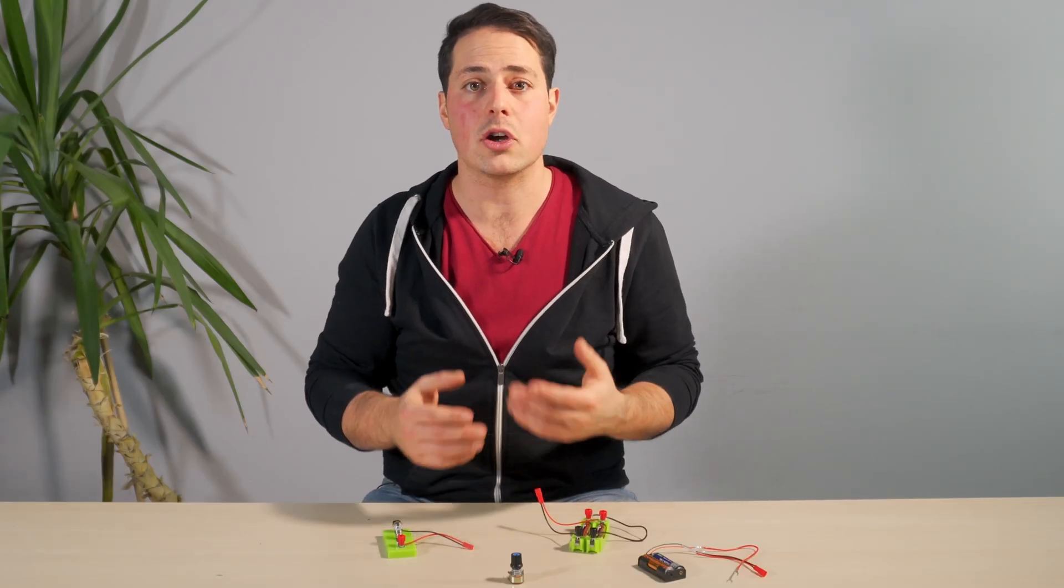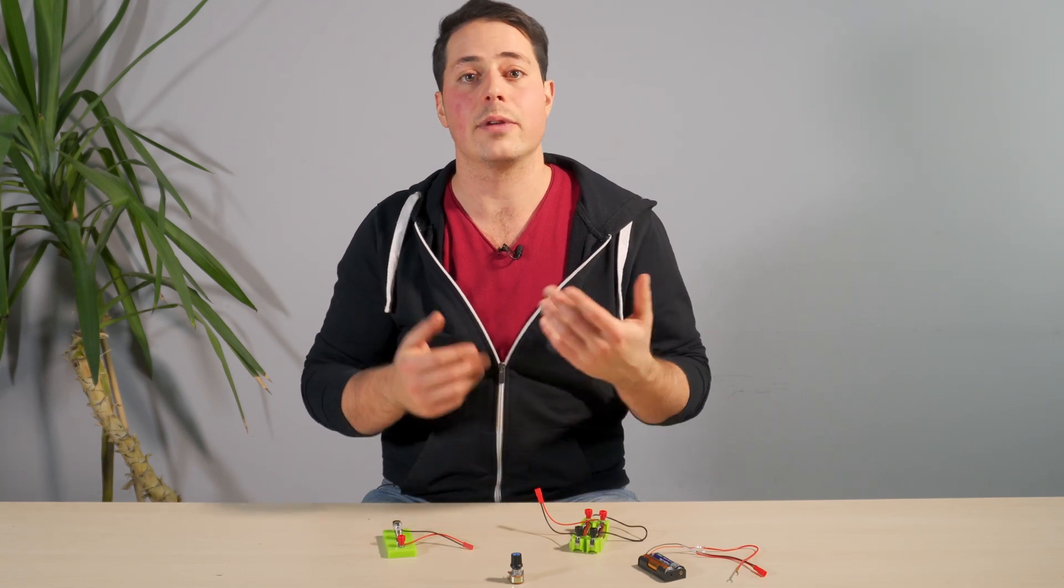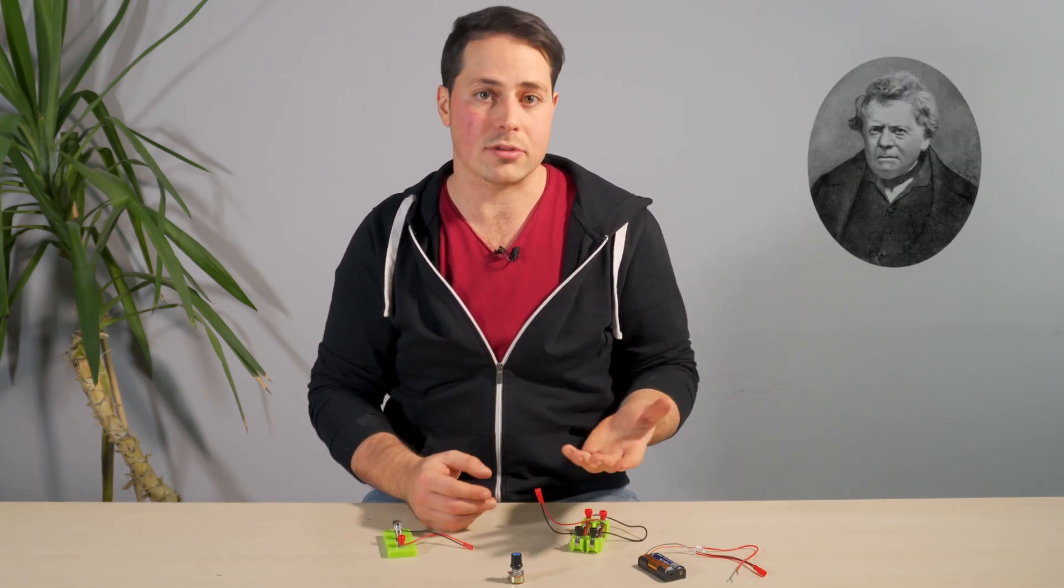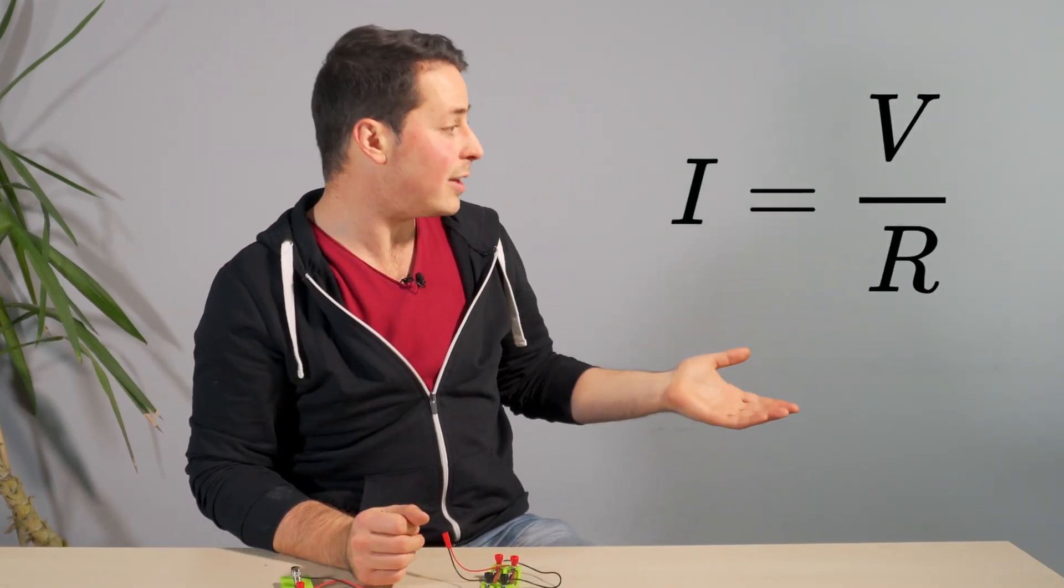The reason this can happen is called Ohm's law, in honor of Georg Ohm, who was the first guy to describe it. In its simplest form, it relates voltage, current, and resistance, using this very simple formula. This guy is also the reason why the units for measuring electrical resistance are called Ohm. Okay, enough. So a resistor is just a component of a circuit that's there to reduce the current. Exactly.